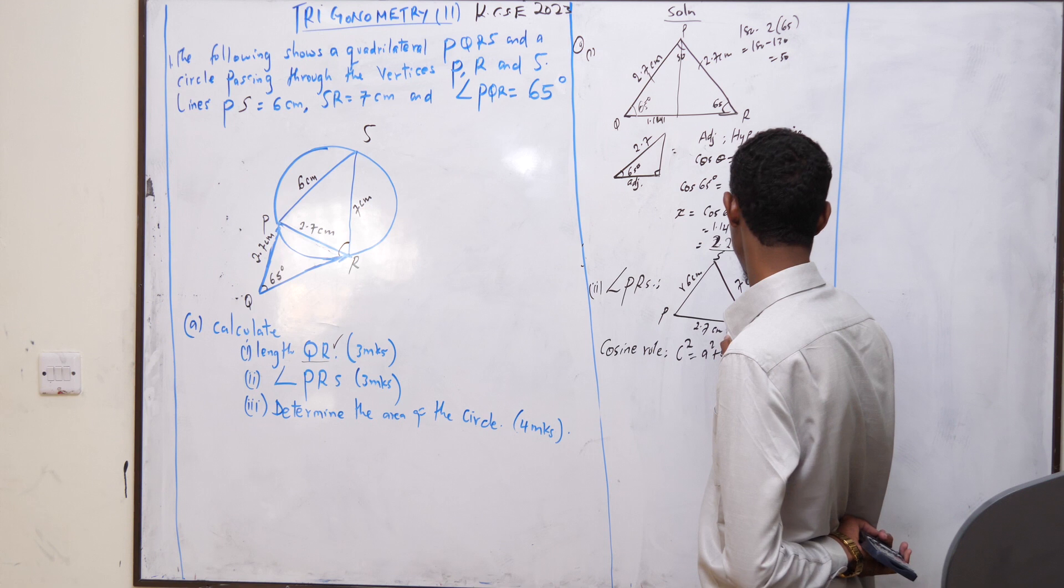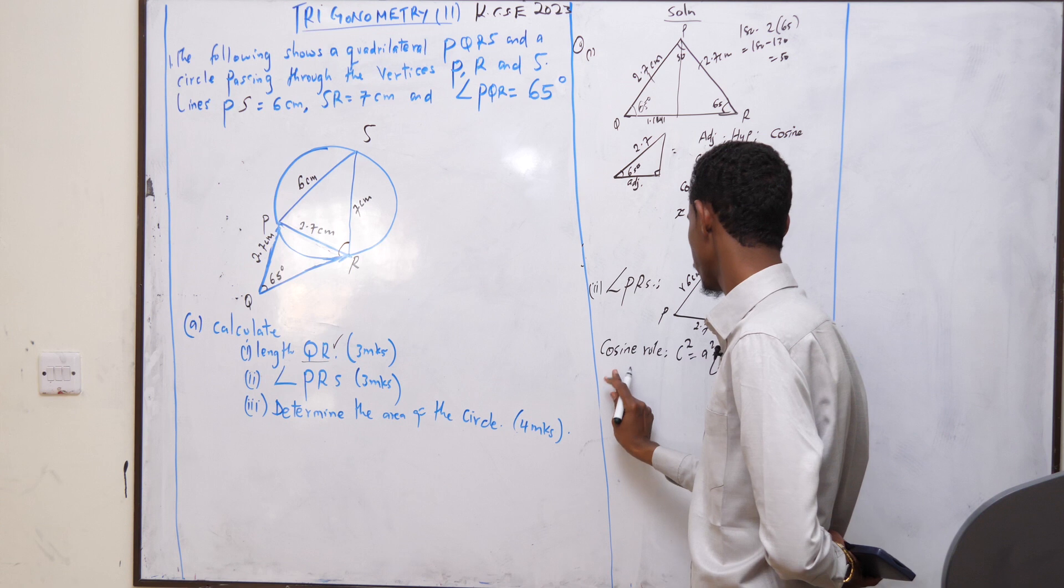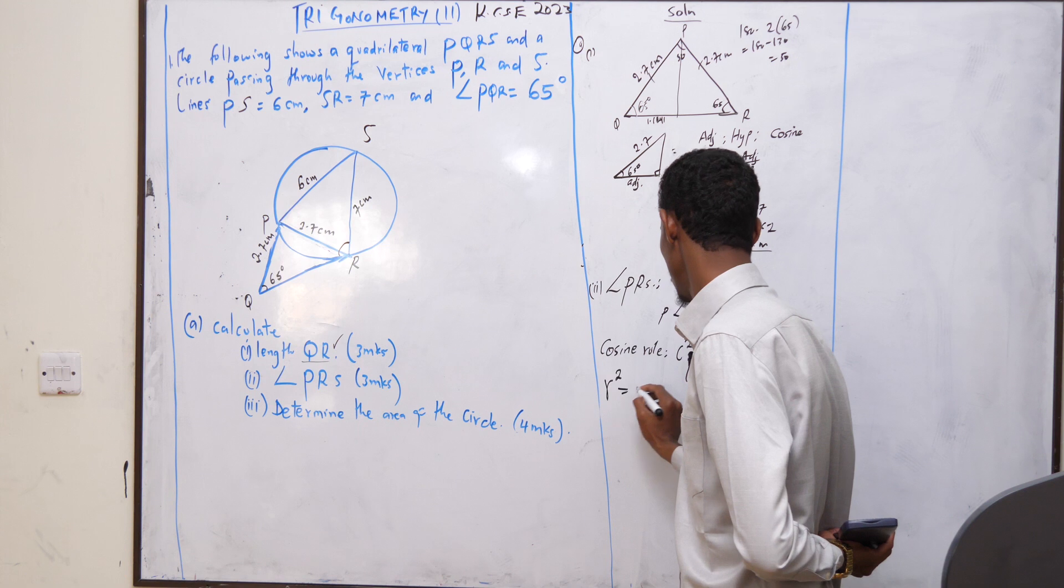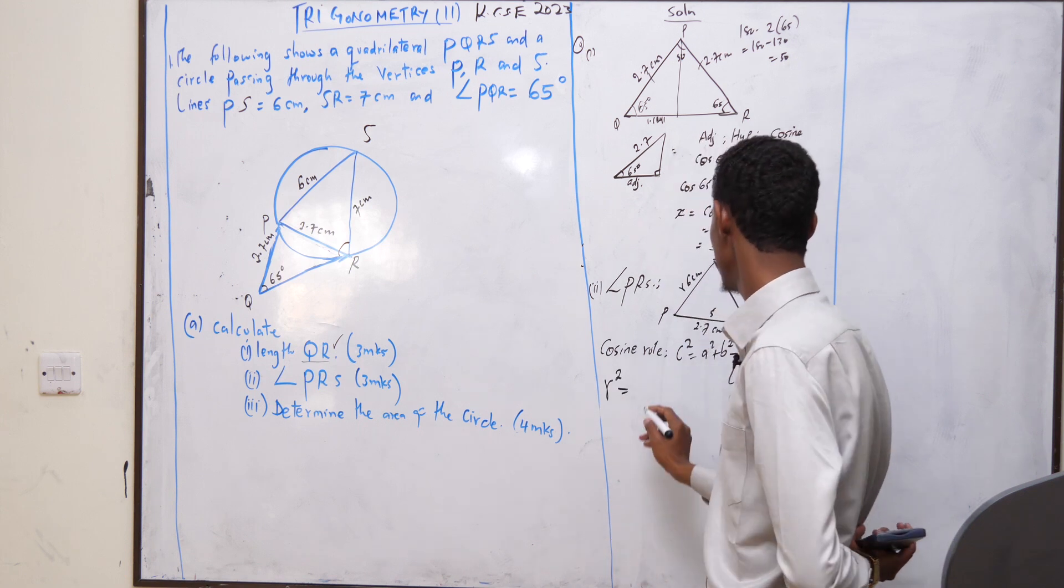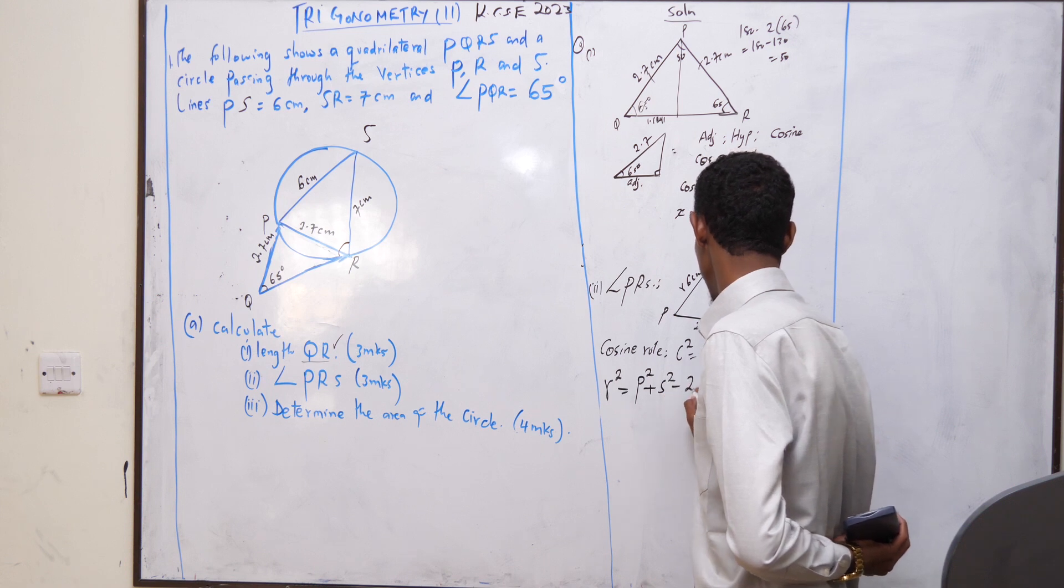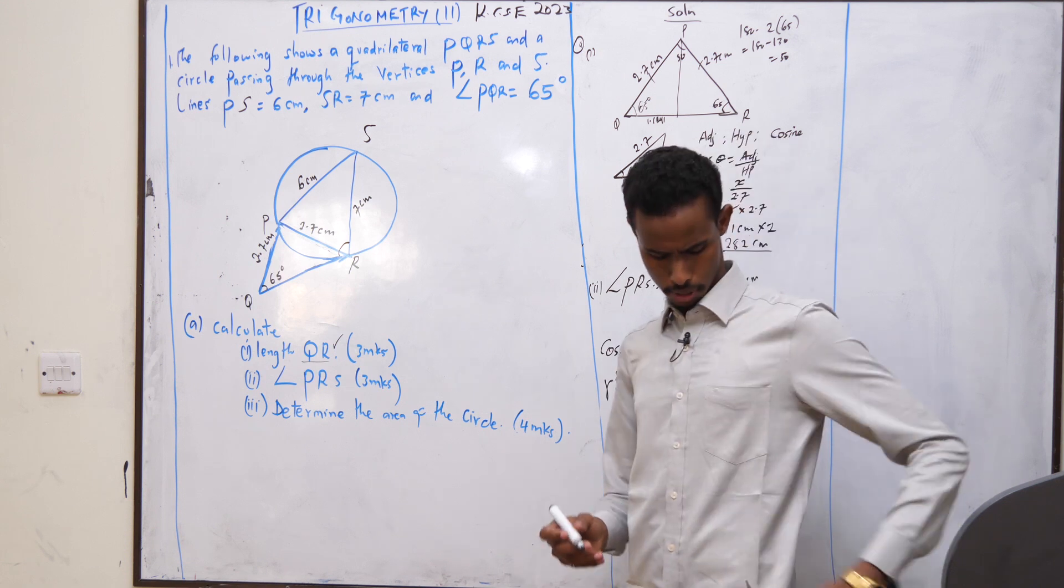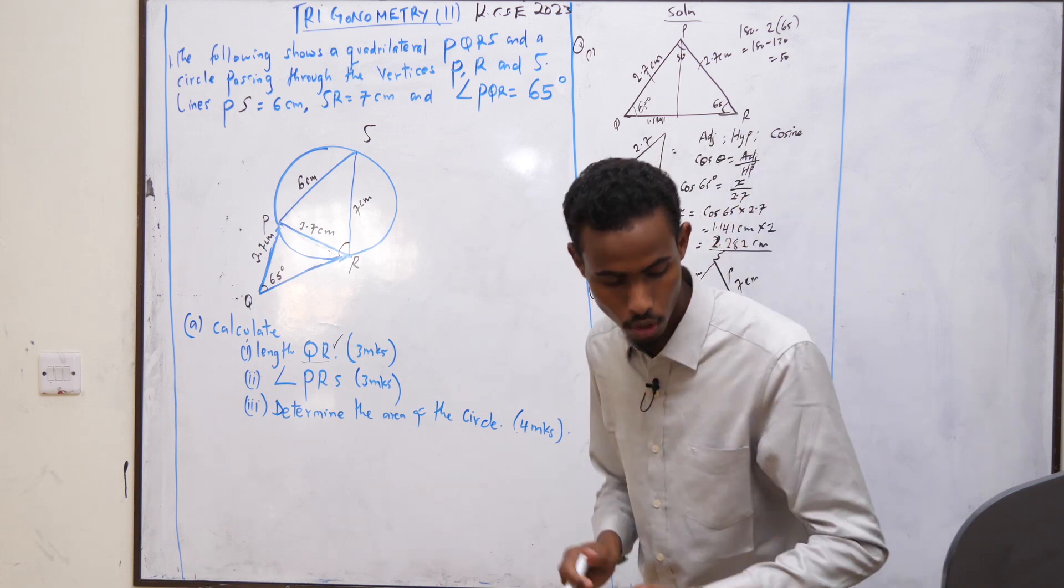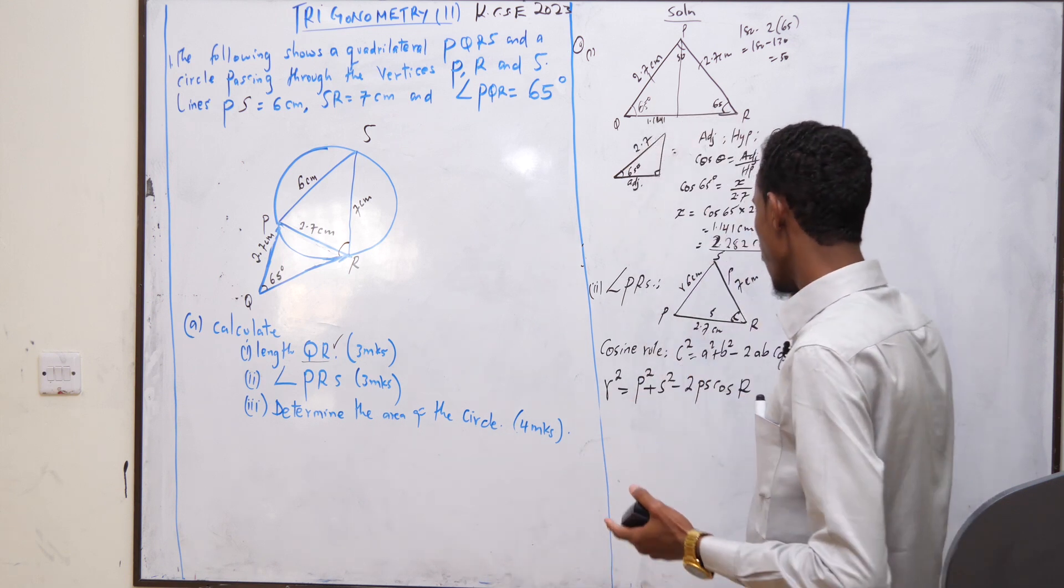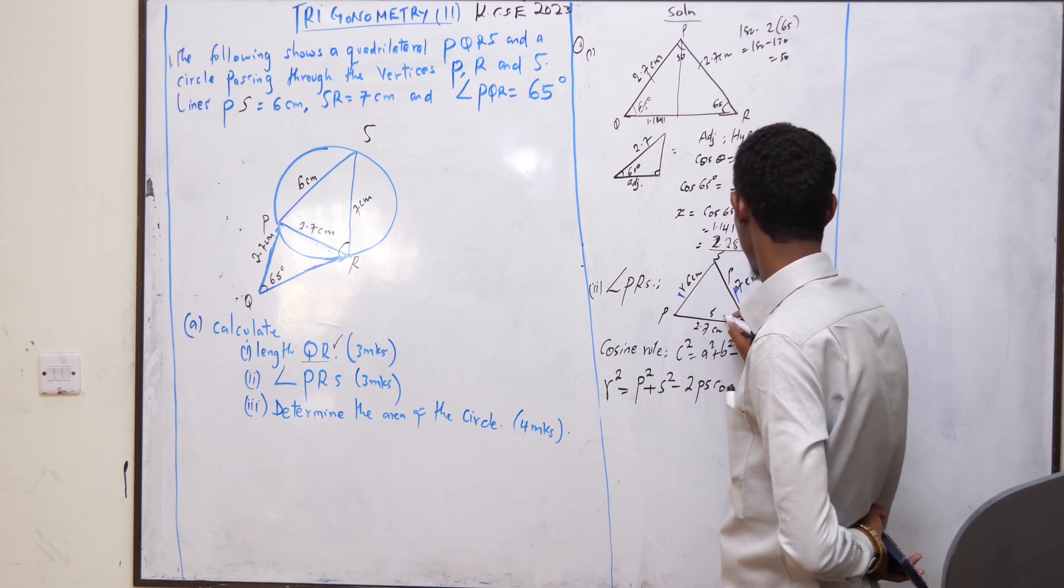Minus 2AB cos C. You are going to say R squared will be equal to P squared plus S squared minus 2PS cos R. Pay attention. This is our R, this is our P, and this is our S.